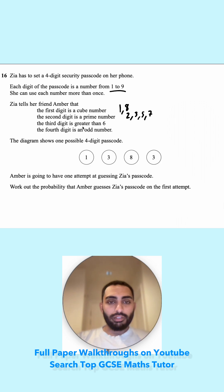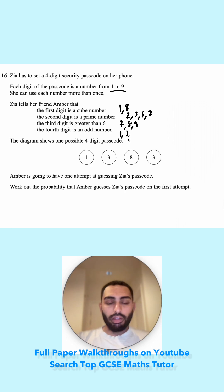The third digit is greater than 6, so it can't be 6, so it has to be 7, 8, or 9. The fourth digit is an odd number, so it has to be 1, 3, 5, 7, or 9.